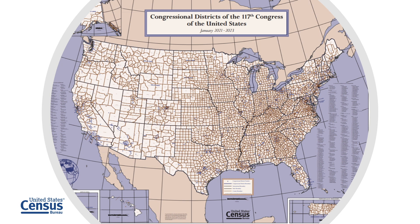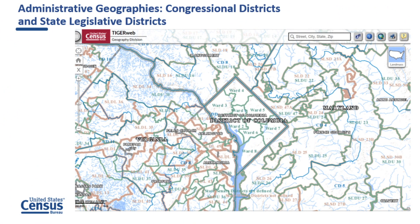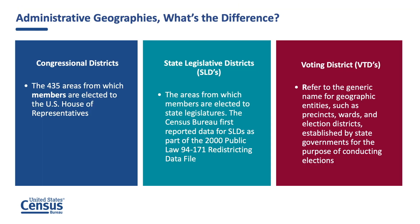The number of representatives per state is updated after each decennial census. State legislative districts are the areas from which members are elected to the upper and lower chambers of the state legislatures. These are updated after each decennial census. The Census Bureau first reported data for the state legislative districts as part of the 2000 Public Law 94-171 redistricting data file. Voting districts refer to the generic name for geographic entities such as precincts, wards, or election districts established by state governments for the purpose of conducting elections.